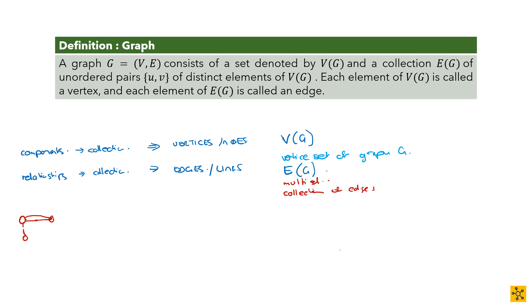So the definition: a graph G is equal to a pair (V, E), consisting of a set V(G) — the vertices set — and a collection E(G) of unordered pairs of vertices, the edges. The unordered part is necessary to account for the broad scope: if edges have direction they would be ordered, but the basic graph definition uses unordered pairs, meaning the edge can go from A to B or B to A.